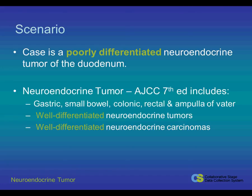According to the AJCC 7th Edition, the Neuroendocrine Tumor Chapter includes Gastric, Small Bowel, Colonic, Rectal, and Ampullary tumors, and these are all reflected in the Collaborative Stage Schemas. It is meant to be used for well-differentiated neuroendocrine tumors and well-differentiated neuroendocrine carcinomas.